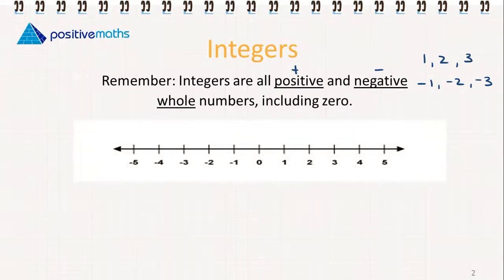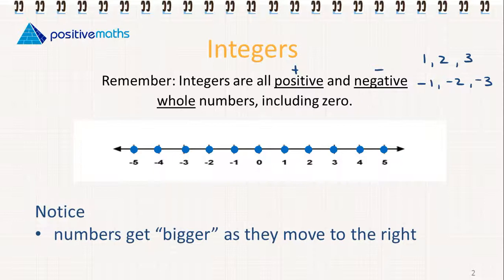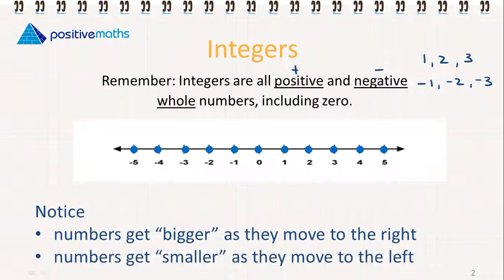To plot these on a number line, because they're whole numbers, we're using just dots at the points where the numbers are — from minus 5 going all the way up to 5. The arrows at either end indicate that it goes on to infinity. Numbers get bigger as they move to the right, and numbers get smaller as they move to the left.